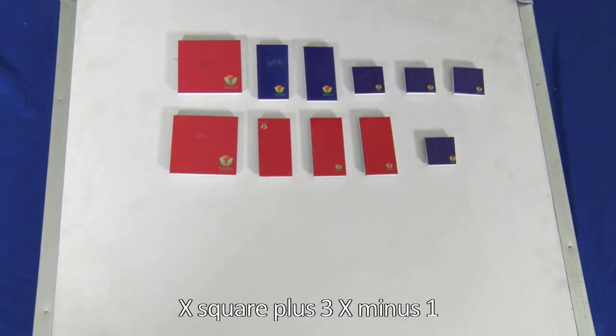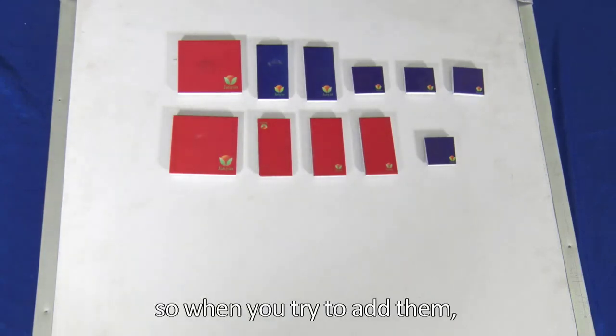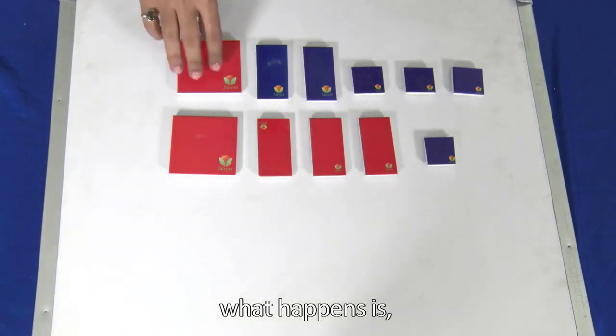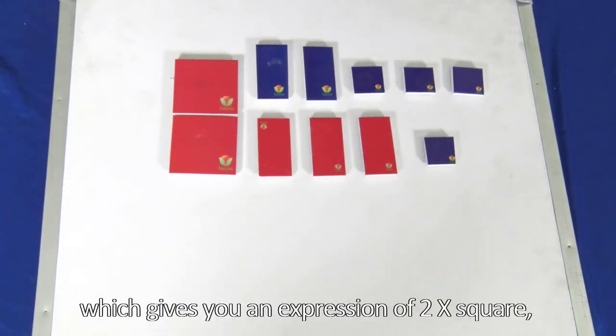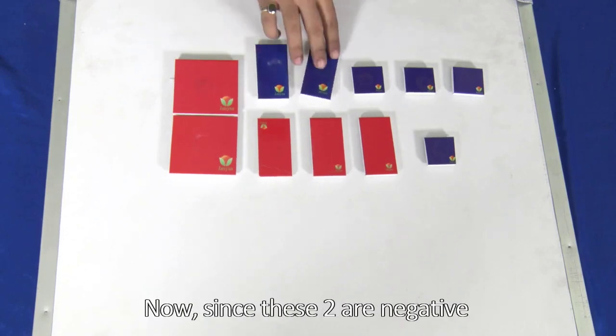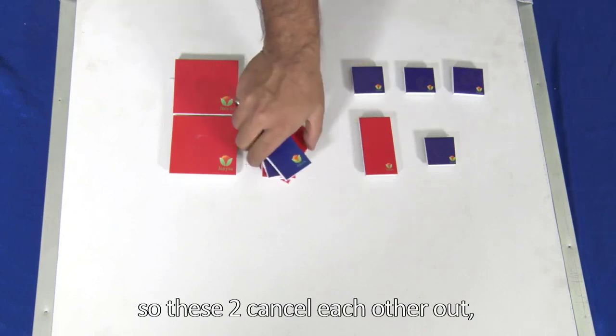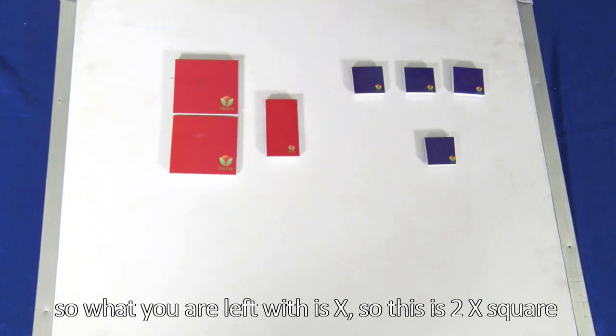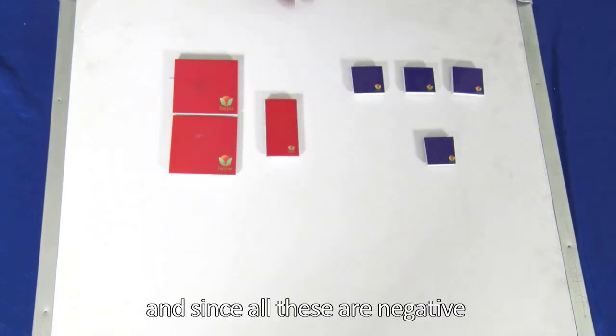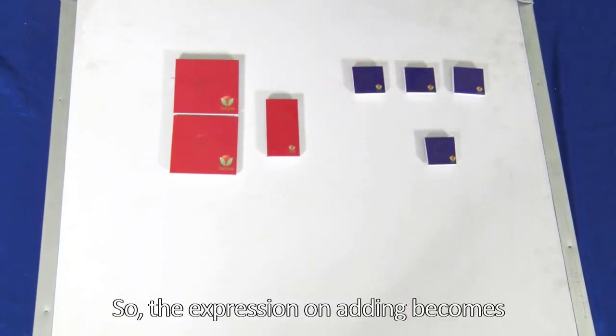Now we have this expression x square plus 3x minus 1 and x square minus 2x minus 3. Now let us try to add them. So when we try to add them, these two get added together which gives you an expression of 2x square. Now since these two are negative and these are positive, these two cancel each other out. So what you are left with is x, so this is 2x square plus x. And since all these are negative squares 1 by 1, so minus 4. So the expression on adding becomes 2x square plus x minus 4.